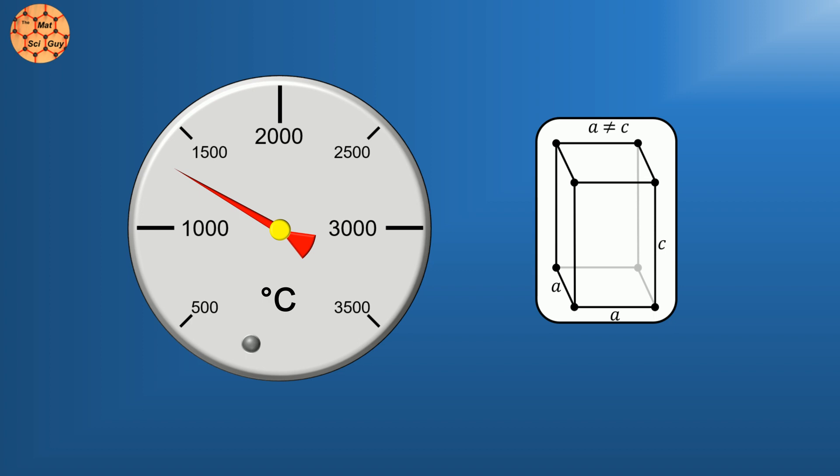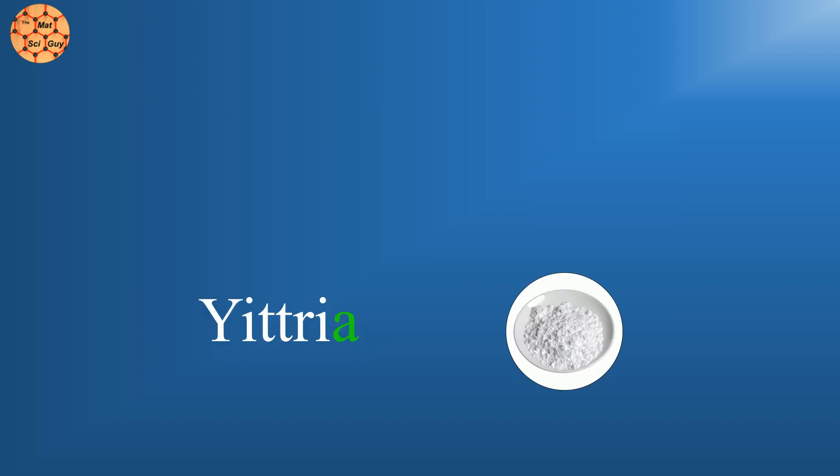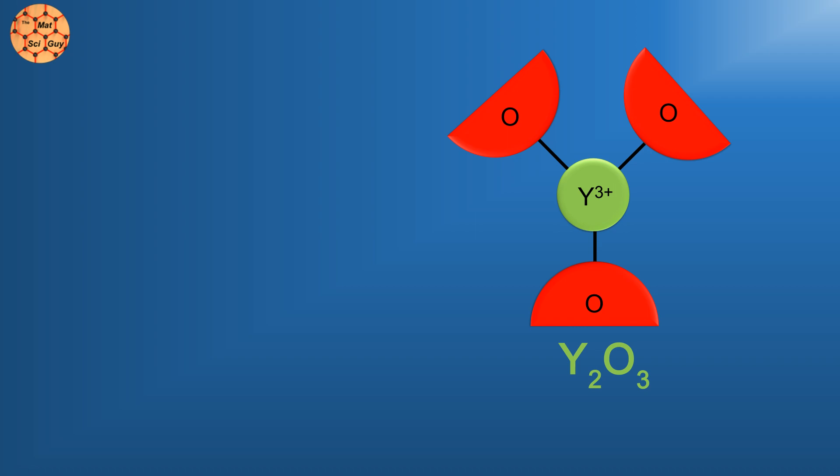The most common stabilizer is yttria. Like zirconia, yttria simply means an oxide of the metal yttrium. The yttrium ion in the oxide is 3+, instead of the 4+ of zirconium. This means the yttrium has basically lost one fewer electron than zirconium, making the ionic radius slightly larger.